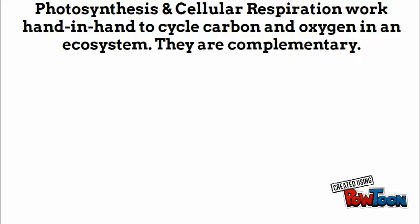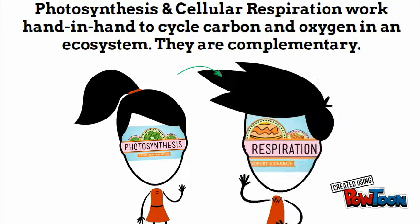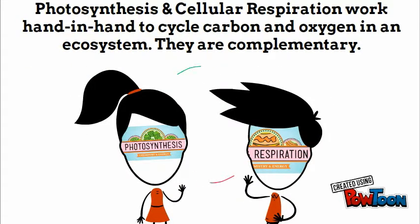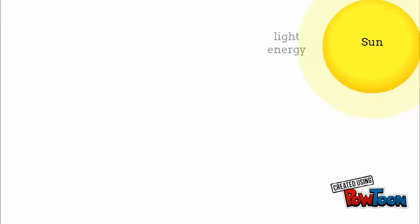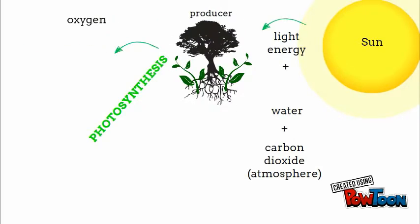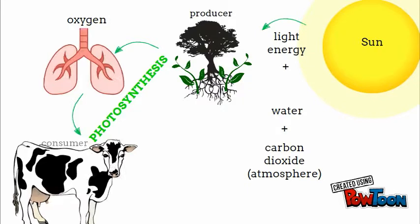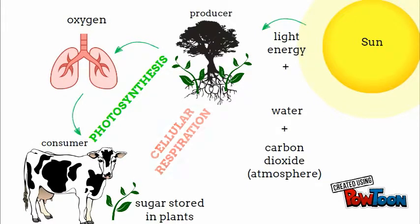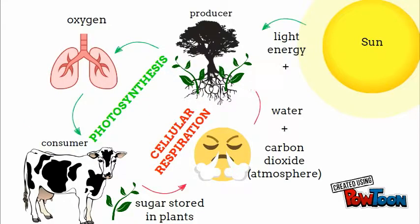Overall, photosynthesis and cellular respiration work hand in hand to cycle carbon and oxygen in an ecosystem — they complement each other. In the big picture, light energy, water, and carbon dioxide are used by producers to produce oxygen. This oxygen, along with sugars from plants, is used by consumers to conduct cellular respiration, producing carbon dioxide, which is then reused by producers to keep the cycle going.